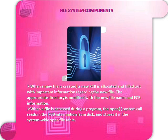File system components. When a new file is created, a new FCB is allocated and filled out with important information regarding the new file. The appropriate directory is modified with the new file name and FCB information. When a file is accessed during a program, the open system call reads in the FCB information from disk and stores it in the system-wide open file table.